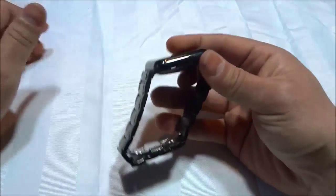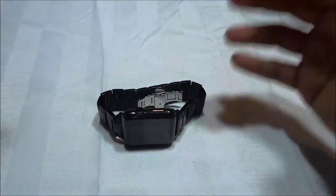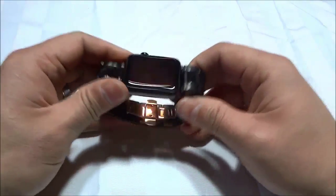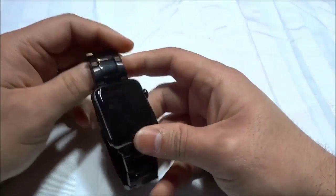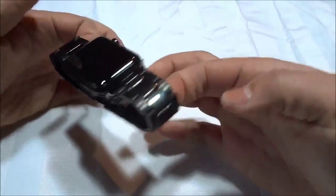And that is basically it. In this video review I have reviewed the features of this stainless steel band for the Apple watch. And once again this is the Pomarx 42mm stainless steel band. And that is all I have for you today. Thanks for watching.